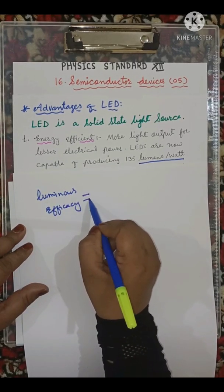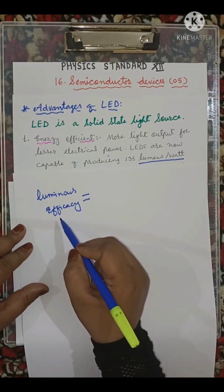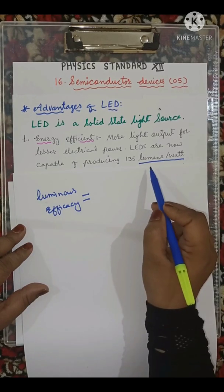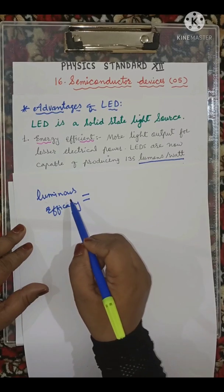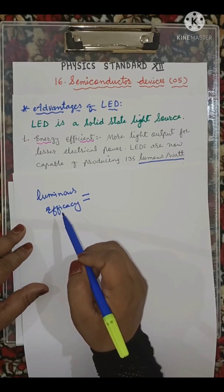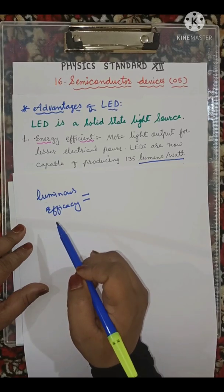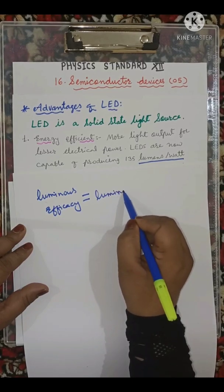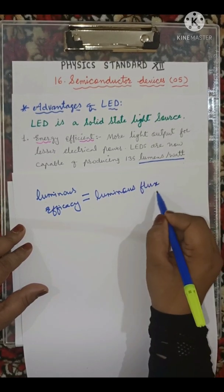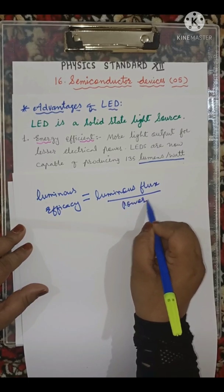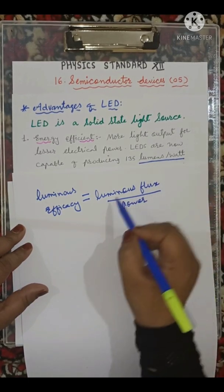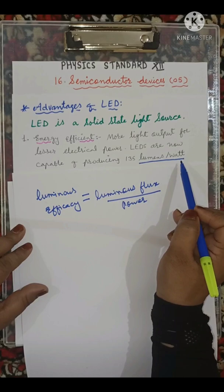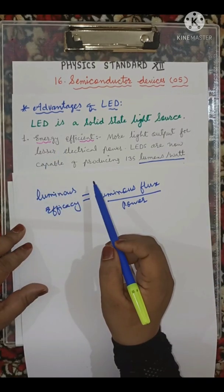Luminous efficacy means how well a light source produces visible light. Lumens per watt is the unit of luminous efficacy, equal to luminous flux divided by power. So this is the first advantage of LED: it is energy efficient.